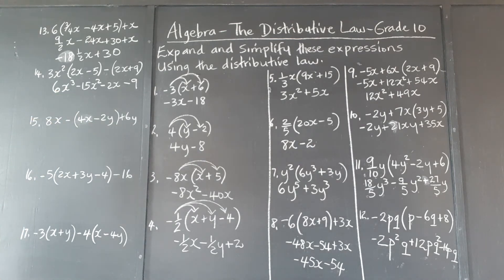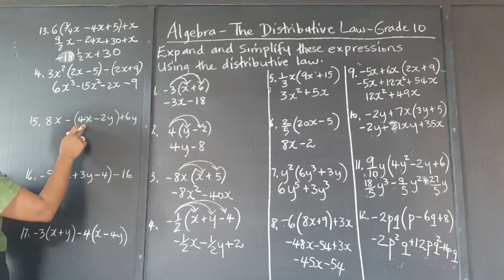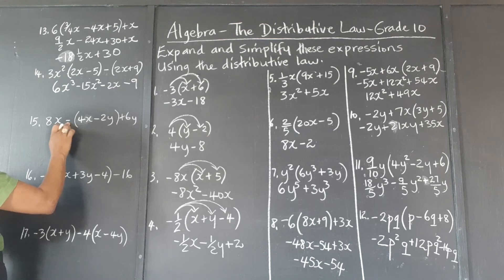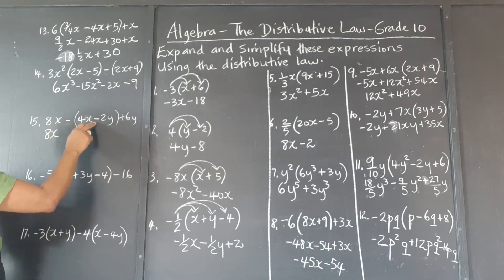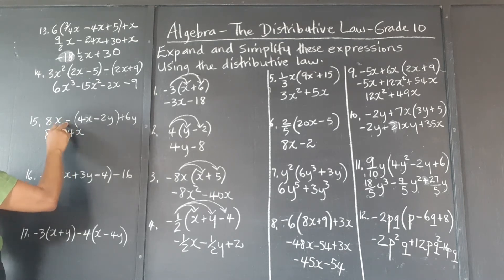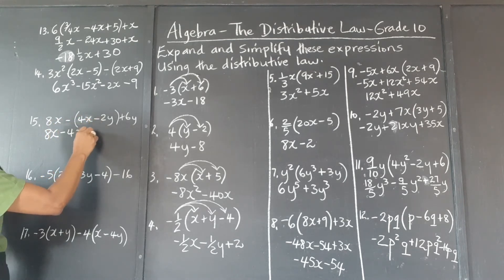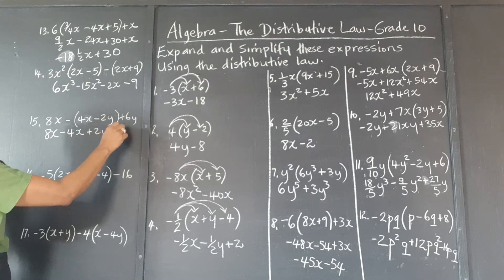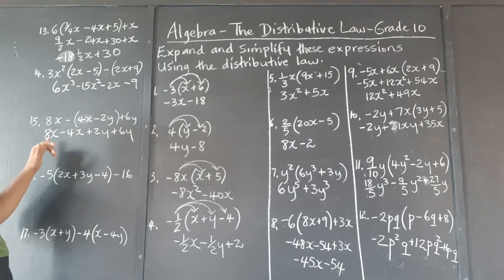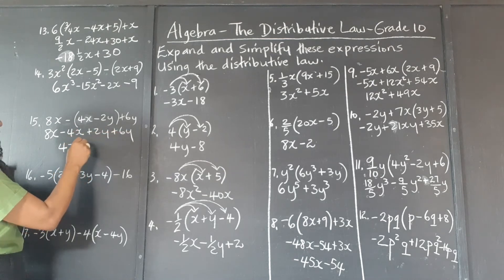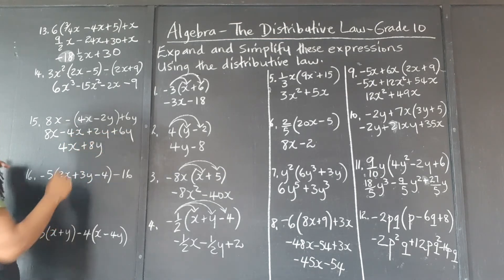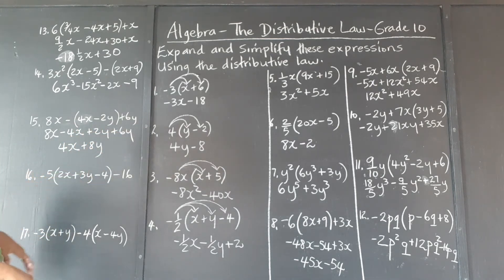The 8x is not affected by the brackets — it's separated by this minus sign, so we write back 8x. Negative times 4x is negative 4x. Negative times negative 2y is positive 2y, plus 6y. 8x minus 4x is 4x; 6y plus 2y is 8y. And this is our final answer.